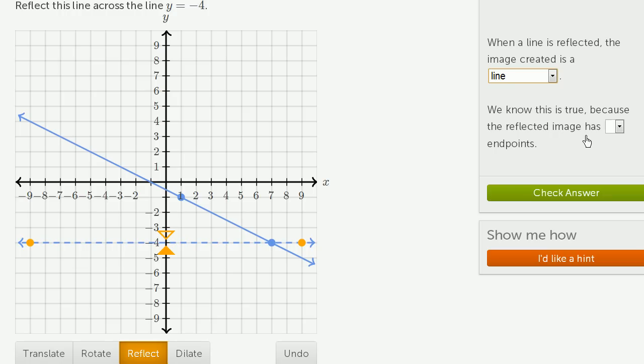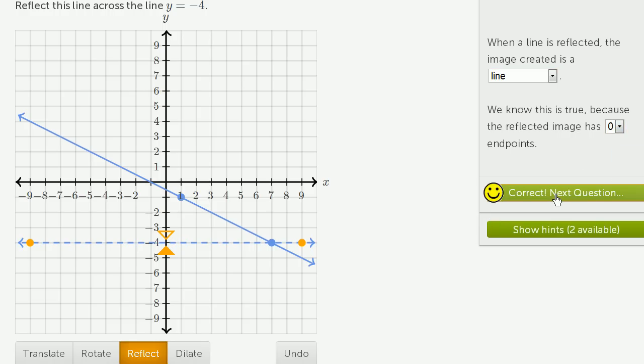We know this is true because the reflected image has zero endpoints. The original image had zero endpoints. These are just two points on the line, not endpoints. They're not defining the end of the line. If they were both endpoints, it would be a line segment. But this line keeps going in both directions. The reflected image has zero endpoints, and we got it right.